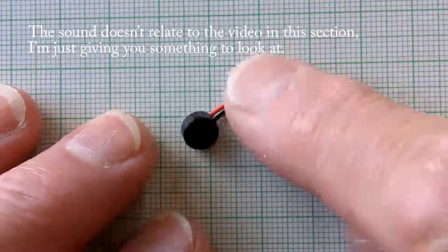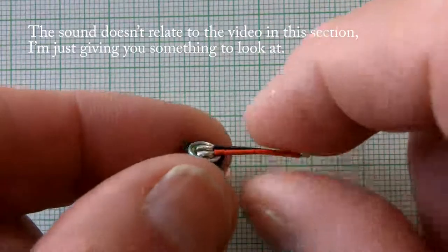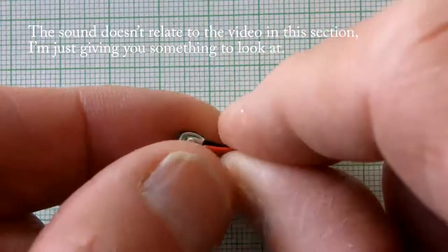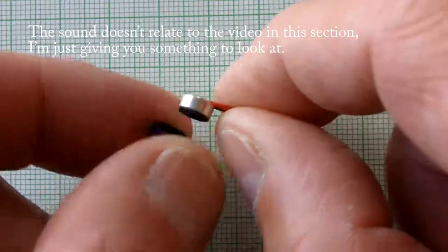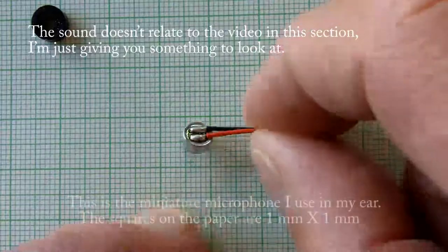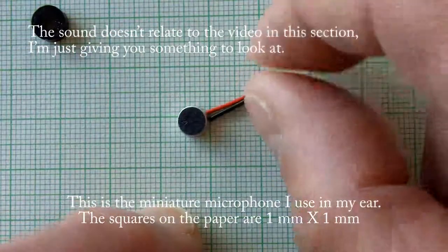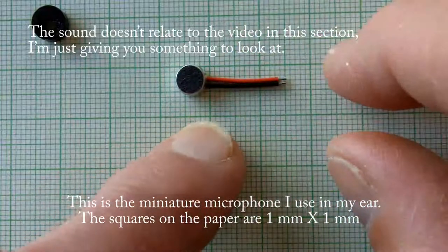It turns out that there are two types of tinnitus. There's objective tinnitus, and that's where somebody else, using a stethoscope, can listen to the sounds in your ear and they can hear it. Then there's another type, which is subjective tinnitus, and this can't be heard by anybody other than the sufferer.